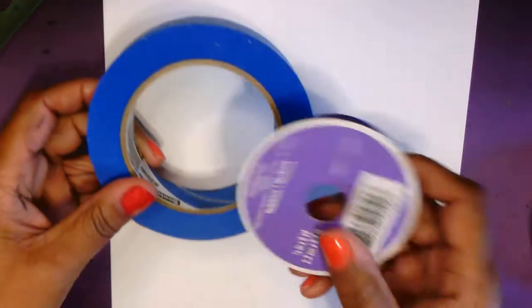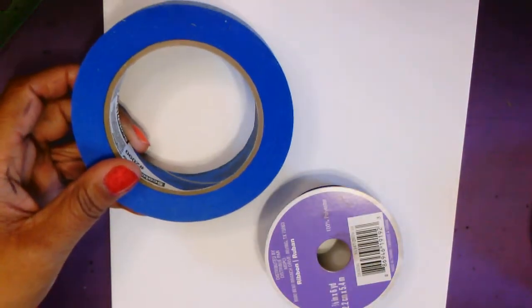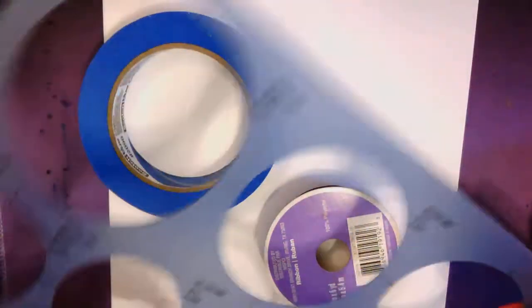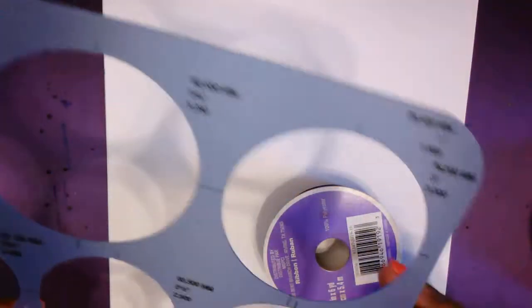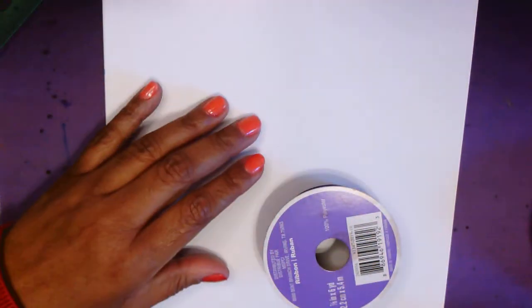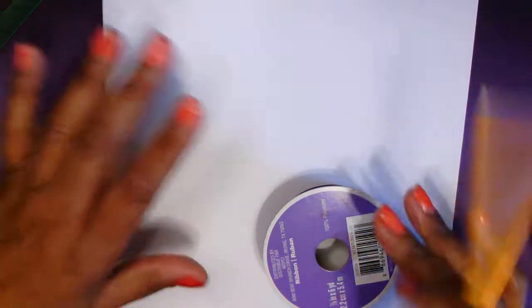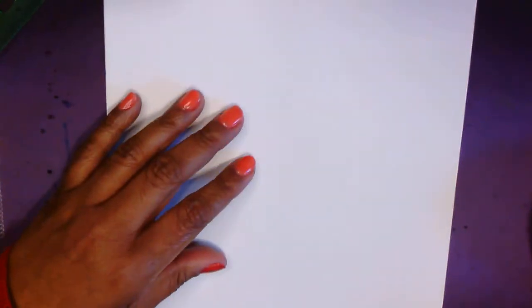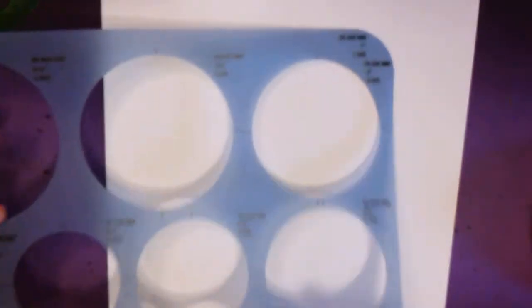So you can draw a circle freehand or you can find things around your house that are round that you can trace. Maybe you even have a template of circles, different sized circles that you can trace. Whatever you have works. So I think I'm going to use a combination of freehand and templates. So the first thing I want you to do is to draw a circle.